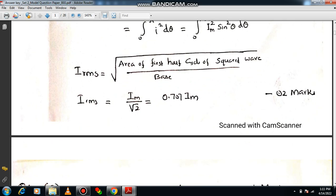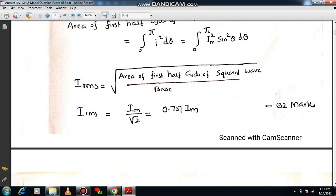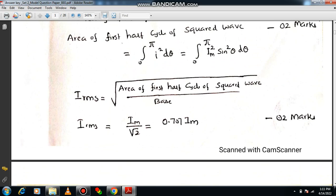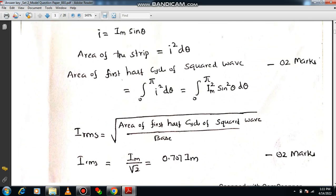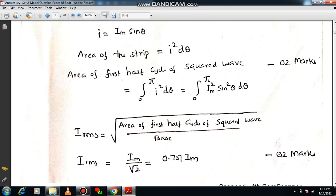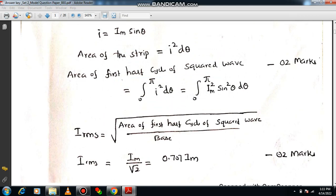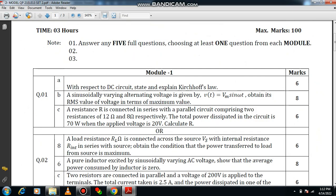Likewise, VRMS = Vm/√2. Then you will be getting remaining 2 marks. Altogether it carries 8 marks. So this is the way how we can divide the marks. I have already derived the expression for RMS value in my previous video. The link of all videos are given in the particular playlist. You can go through once again and have the derivation once more.